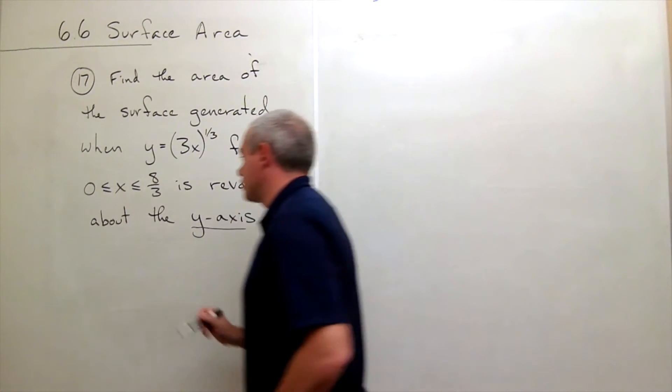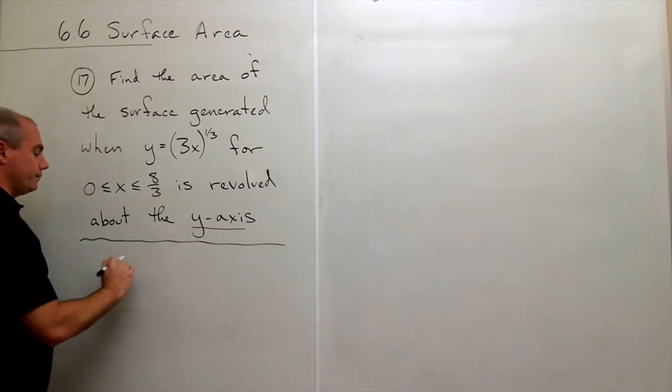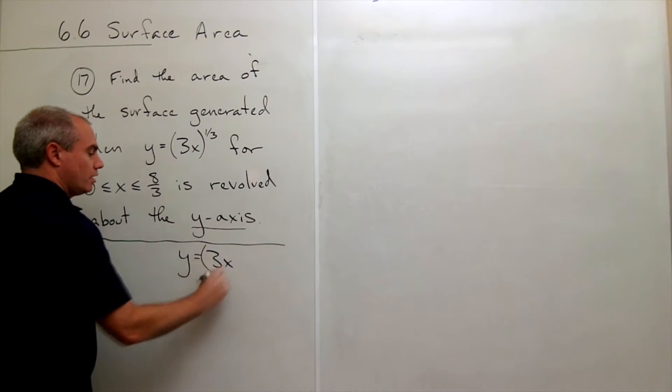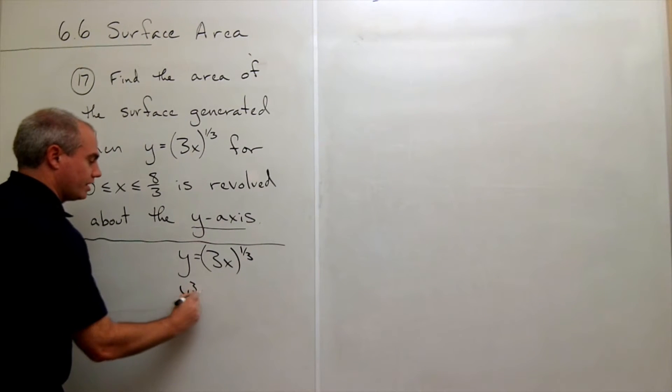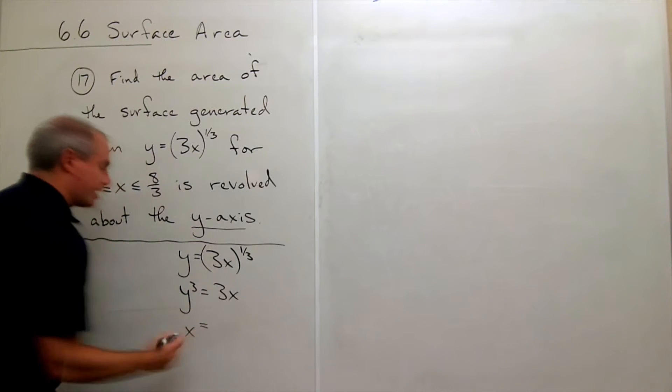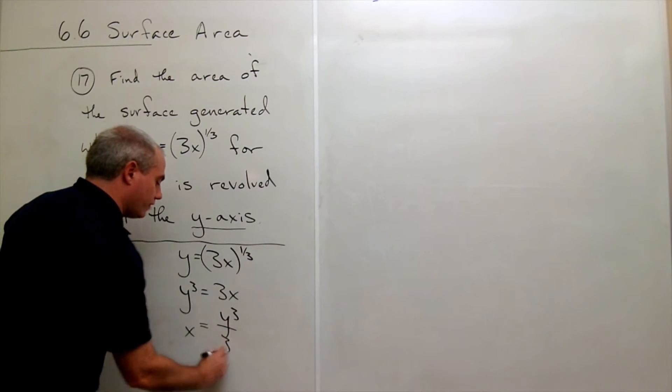So that's what I'm going to do first. I'm going to write this so we've got y equals 3x quantity to the 1/3. That's the same as y cubed is 3x, which is the same as x is equal to y cubed divided by 3.